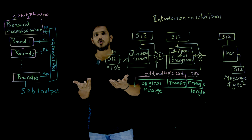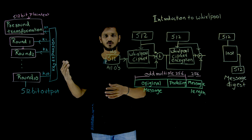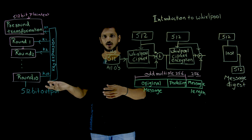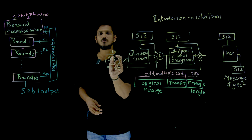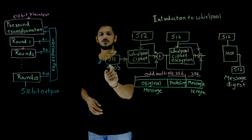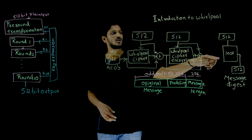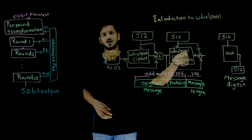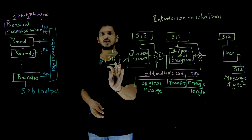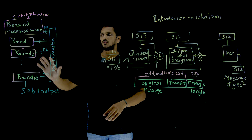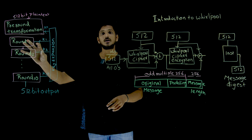Hoping that you already know AES, that is why we are going to explain it fairly quickly. The 512-bit key starts with initial values of all zeros. It is used as the key for the first round, and a new key is derived for each subsequent round. What happens inside this Whirlpool ciphertext block is that it uses 10 rounds.